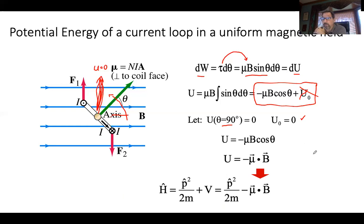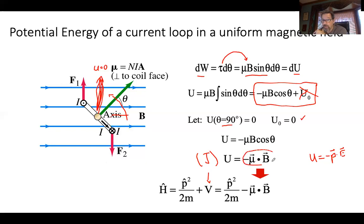We do exactly the same thing for electric potential energy: U = −P·E. These equations are consistent. The units here are joules, and it was in your 112 class. In quantum mechanics, for whatever reason, we write it as V for potential energy in joules. So in the Hamiltonian, when I write P² over 2m plus the potential energy, V means exactly this for a dipole — even though V normally means joules per coulomb.